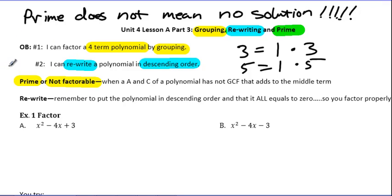There would be a solution if it were an equation. We have something called the quadratic formula that you will learn in the next unit that will help you solve something that you cannot factor. The other thing we're going to learn how to do is rewrite polynomials. Once again, this is strictly review. But when it comes to factoring, you have to be in descending order. And when you have equations, which we don't have right now, you also have to make sure you're equal to zero.